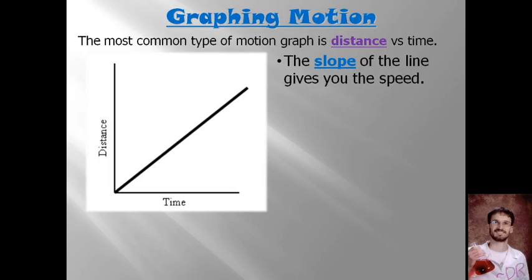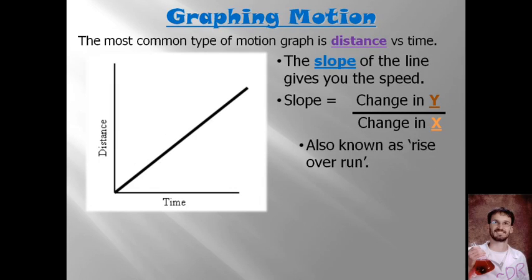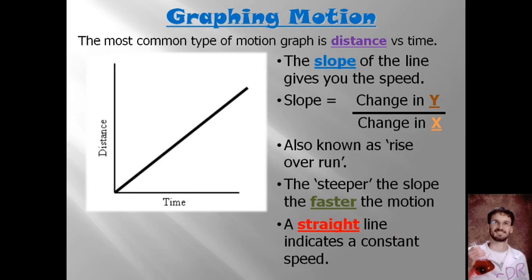Now the slope of a line gives you speed on a distance versus time graph, because remember from math or from the RAMP lab, slope is the change in y over the change in x, also known as the rise over the run. If you're talking about this kind of a graph, then you have distance which is y over time which is x, and remember the formula for speed is distance over time. So literally the slope of this line is the speed that the object is going.